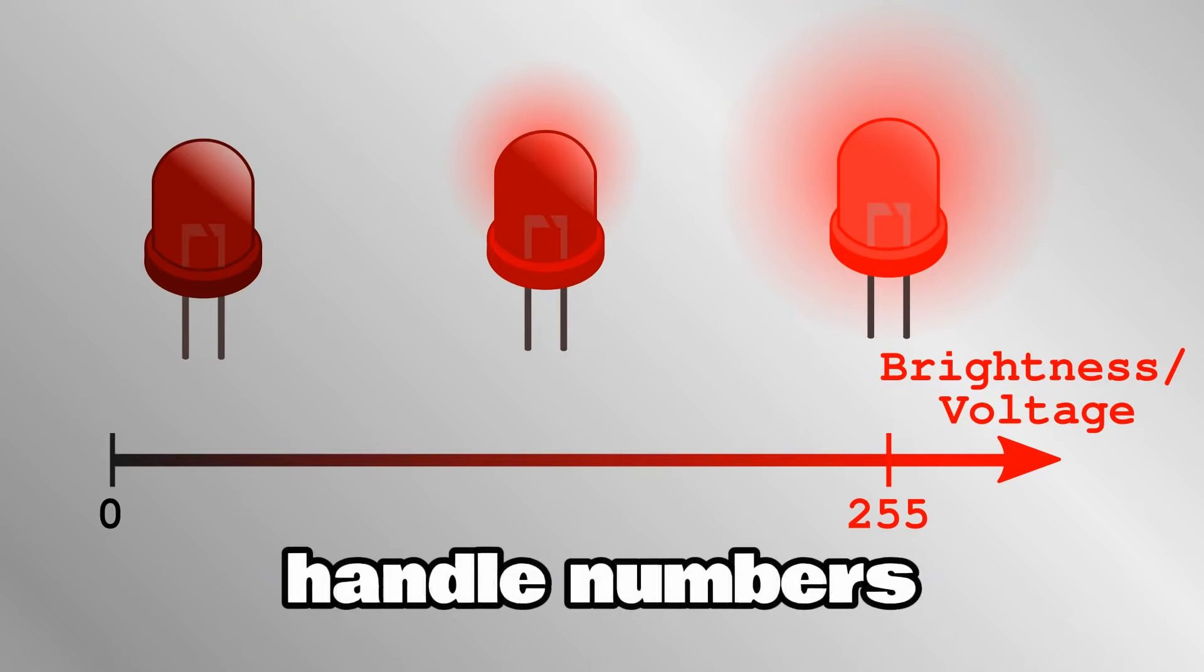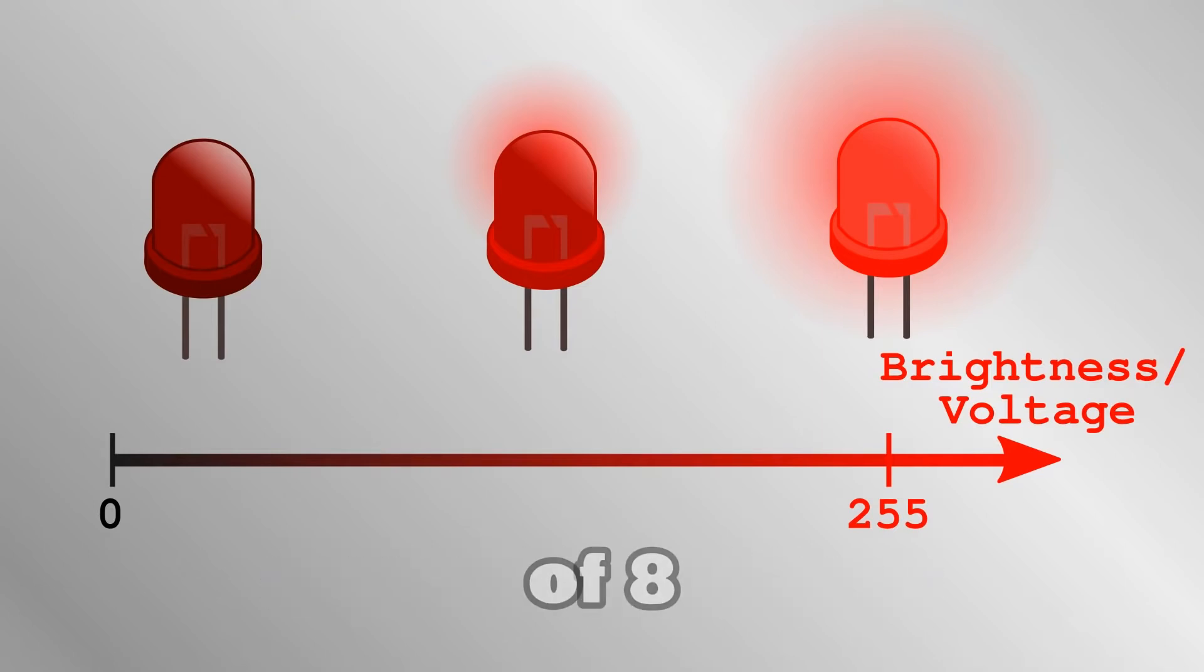Since computers handle numbers in bytes, in other words groups of 8 bits, it makes sense to have the brightness go up on a scale from 0 to 255, the largest value a byte can take.